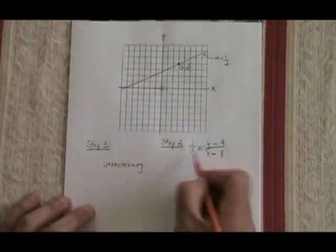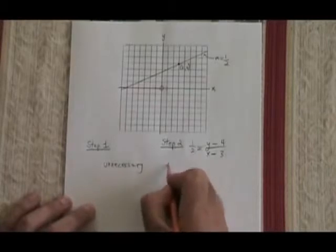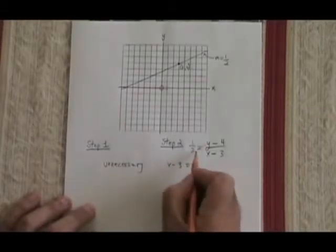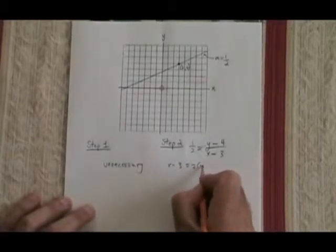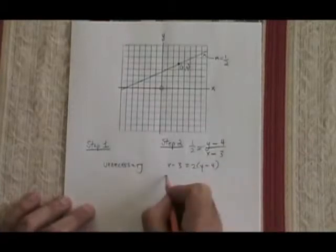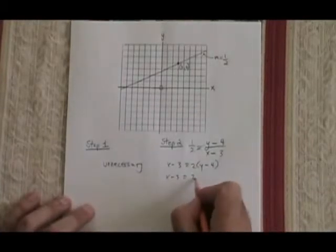And now I'm cross-multiplying. Top times bottom gives x minus 3 equals. Bottom times top gives 2 times y minus 4. x minus 3, therefore, is equal to 2y minus 8.